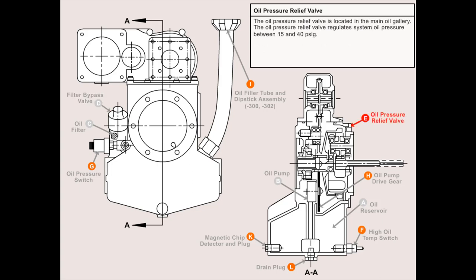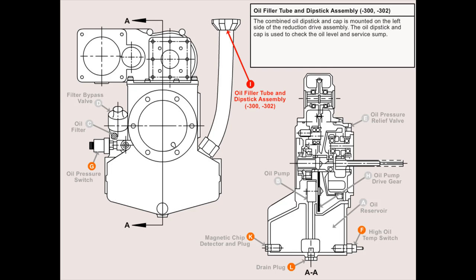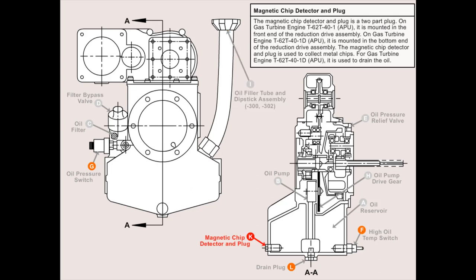The oil pressure relief valve is located in the main oil gallery and regulates system oil pressure between 15 and 40 PSI. The oil pump drive gear is driven by the output shaft, and the turbine assembly input pinion drives the oil pump. The combined oil dipstick and cap is mounted on the left side of the reduction drive assembly and is used to check the oil level and service the sump. The magnetic chip detector and plug is a two-part plug on gas turbine engines T62-T41, mounted in the front end of the reduction drive assembly.